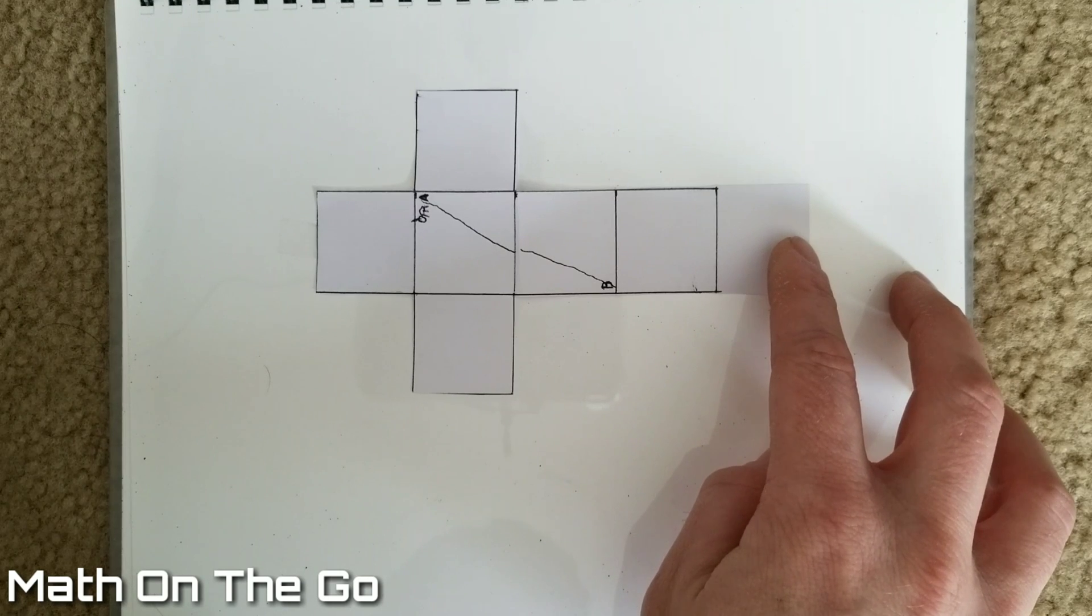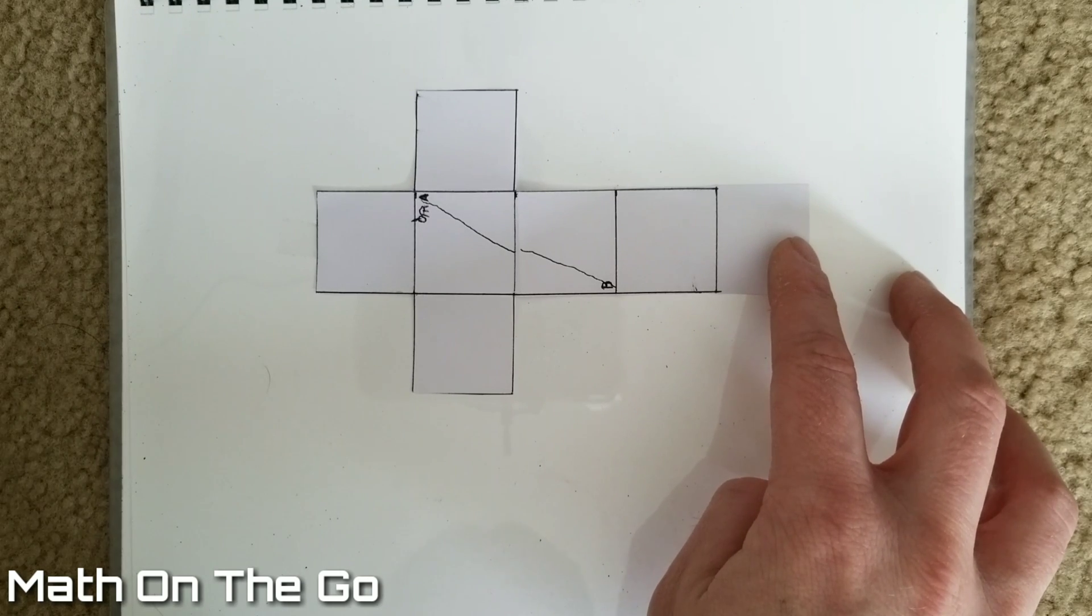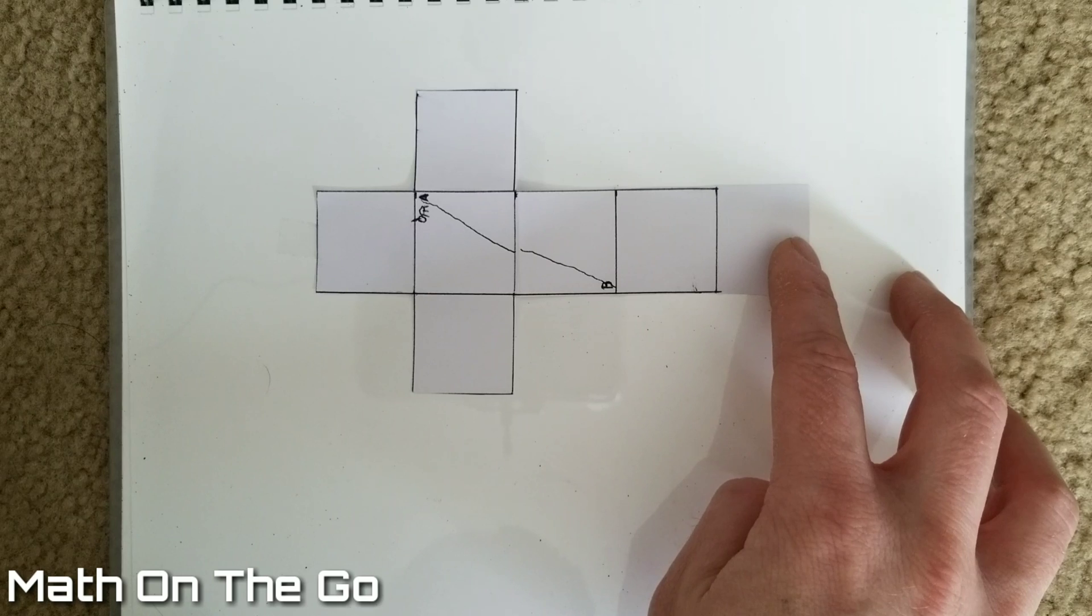Okay, so how long is this line? Is it actually shorter than the nine centimeter walk the ant would take along the edges? We're going to break out the old trustworthy Pythagorean theorem to help us solve this.